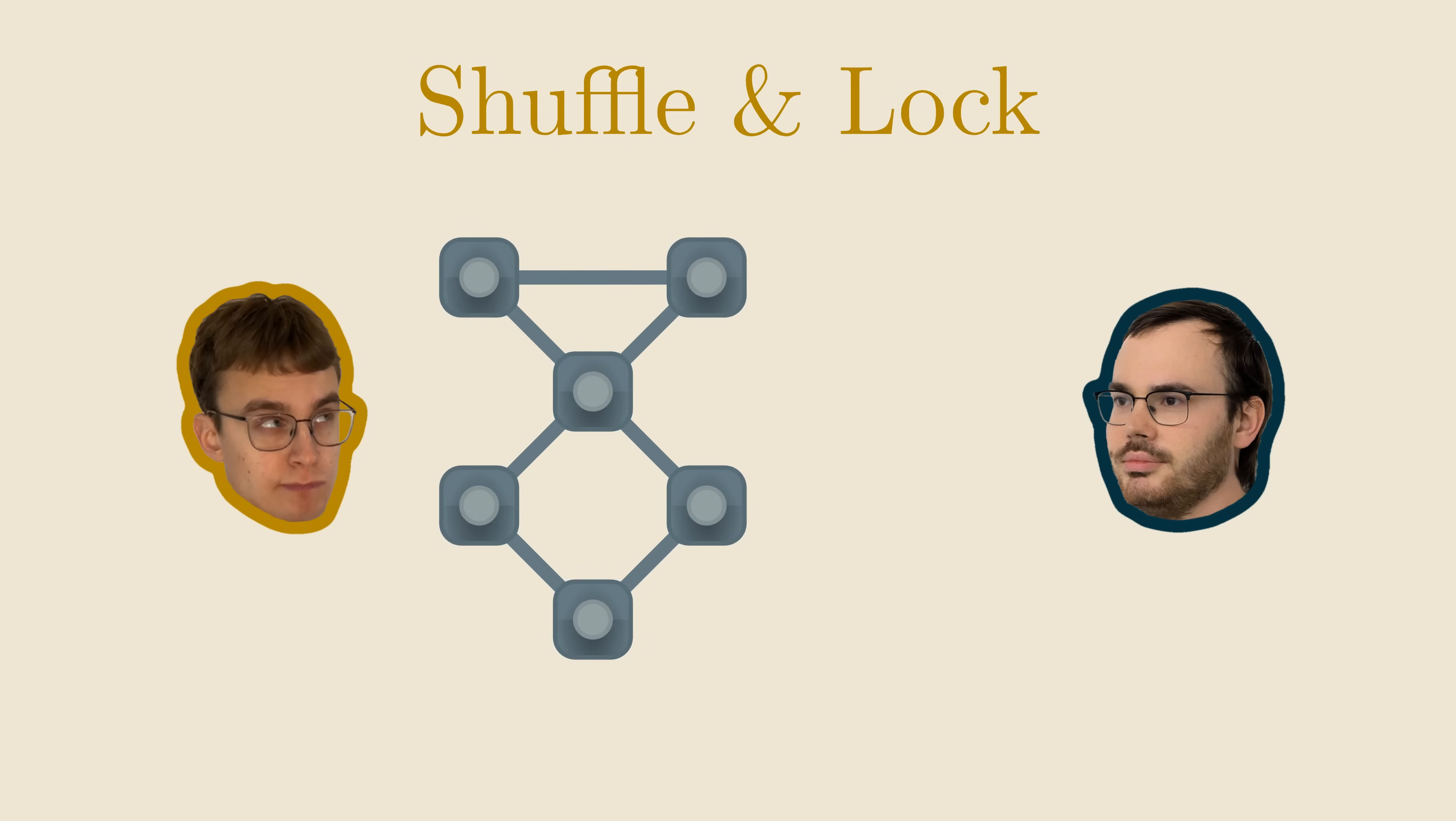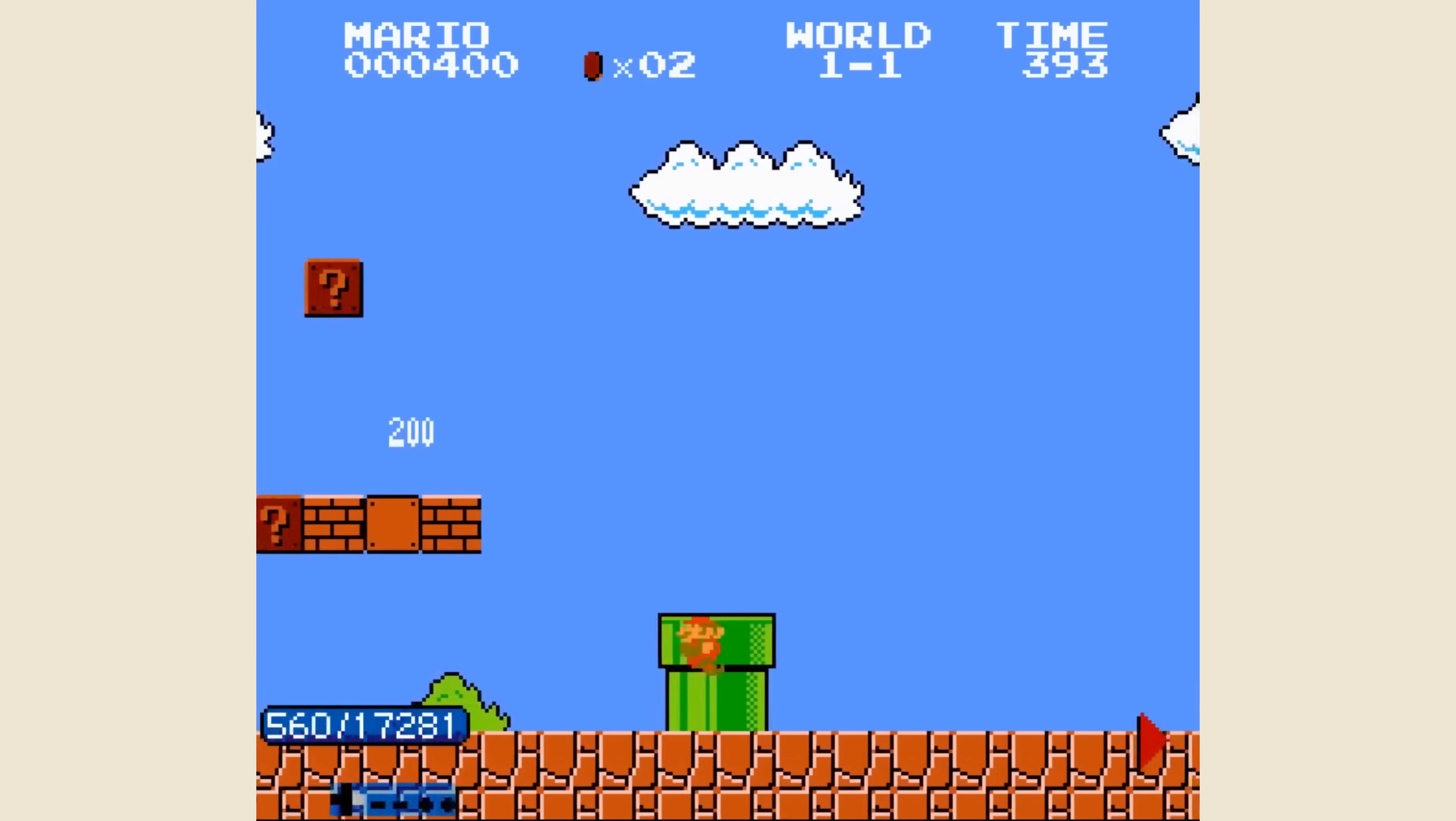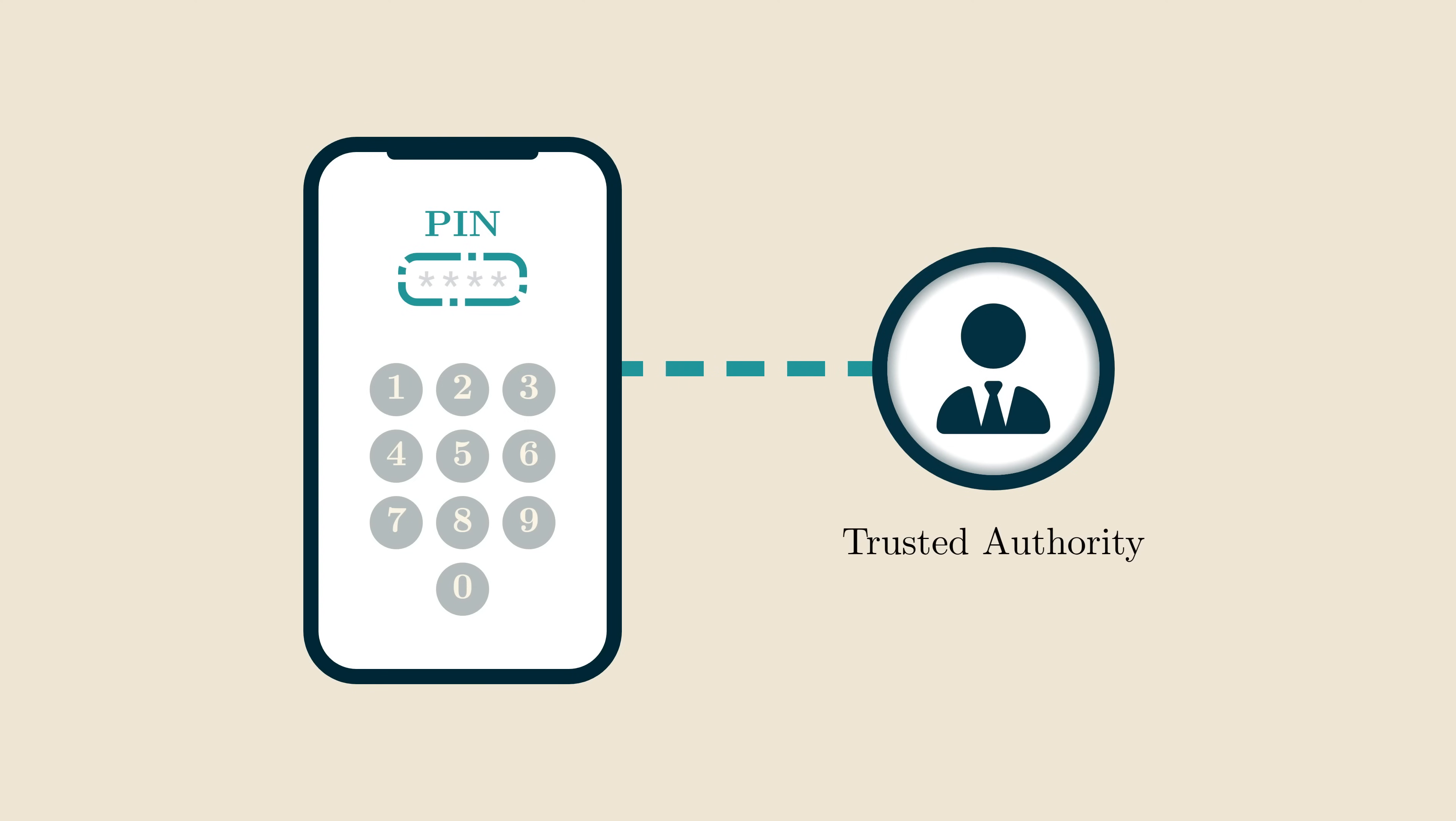This is an instance of a so-called zero-knowledge proof, one of the most fundamental concepts in cryptography. After we construct a zero-knowledge proof for my Sudoku, we'll also touch on some more advanced stuff, like how to make these proofs for Mario speedruns, and how zero-knowledge proofs changed our understanding of the nature of trust.